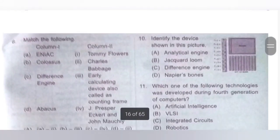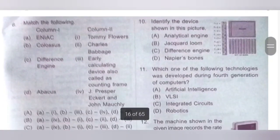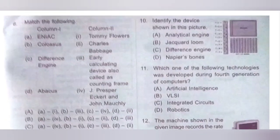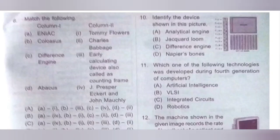10th question: Identify the device shown in the picture. A. Analytical engine; B. Jacquard loom; C. Difference engine; D. Napier's bone. The device shown is Napier's bone — a manually operated calculating device created by John Napier. Option D is the correct answer.